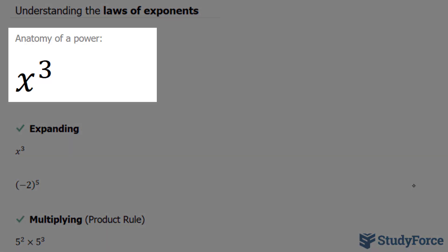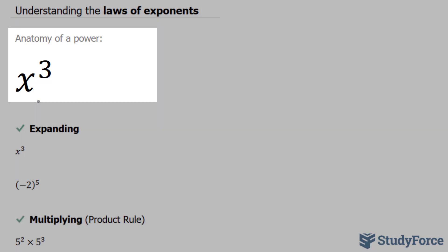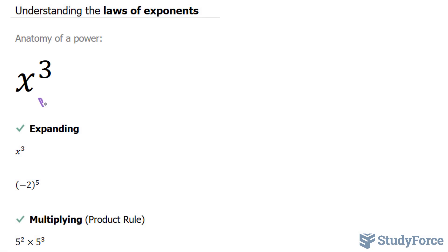To begin, this is the anatomy of a power, where x represents the base, and the 3 represents the exponent.